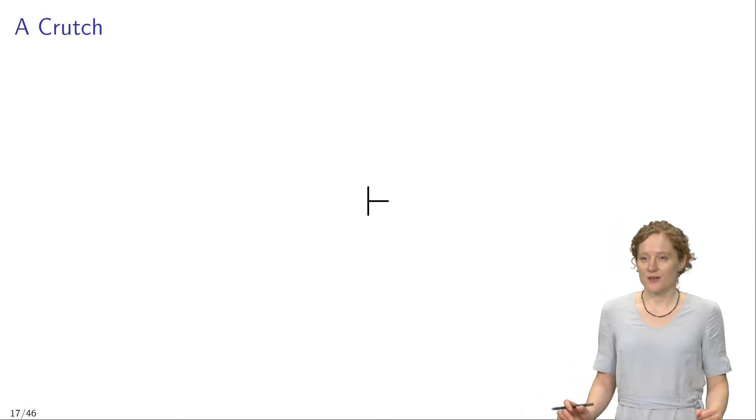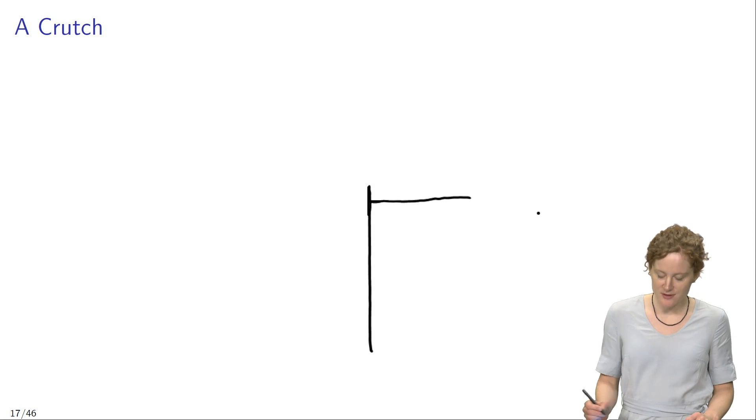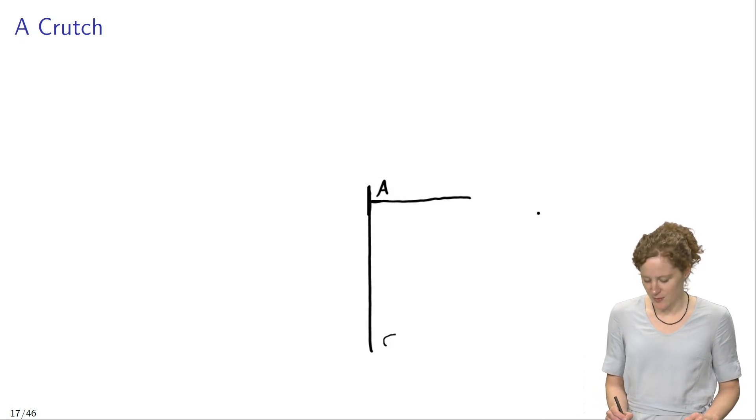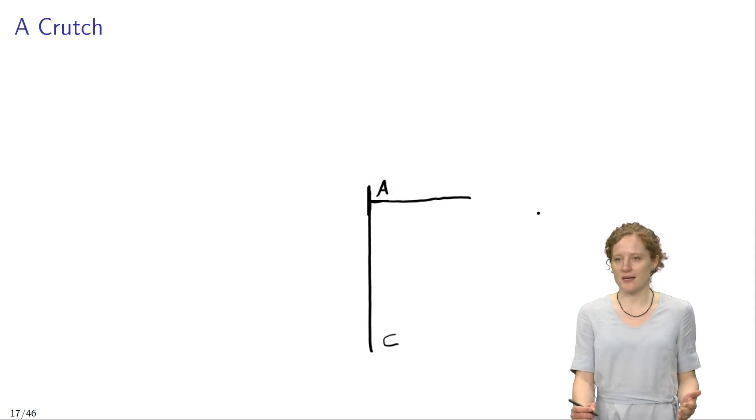The turnstile on the other hand always has to do with proofs. Here's a crutch to help you remember this fact about the turnstile. The turnstile actually looks a little bit like a proof with a Fitch bar attached to it. Above the Fitch bar we put our premise, say A, and at the bottom of this vertical line we put C. I hope that this image is going to help you remember that the turnstile always has something to do with proofs.